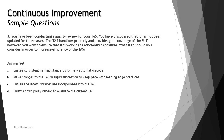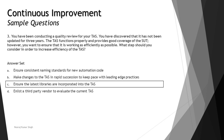Option C: ensure the latest libraries are incorporated into the TAS. That's the most important thing when a TAS has not been updated for many years — make sure the libraries are imported and incorporated. Option D: enlist a third-party vendor to evaluate current tests. That would be an additional cost and is not cost-effective compared to option C. So the right answer is C — ensure the latest libraries are incorporated into the TAS.